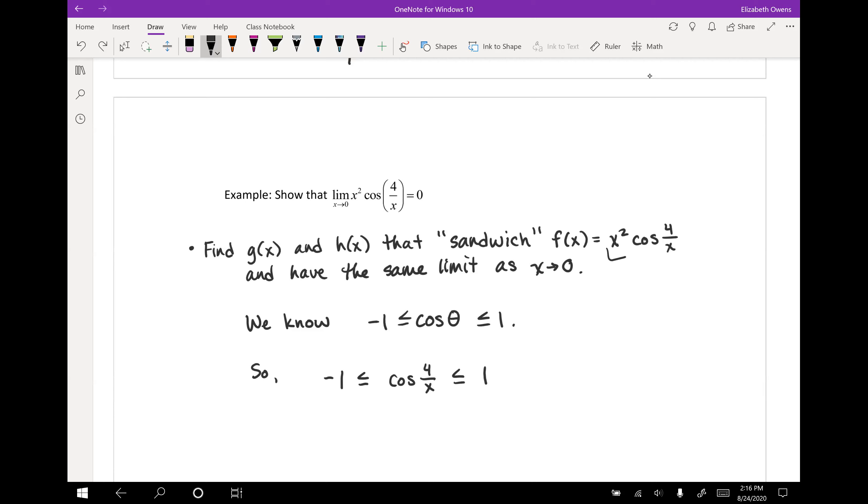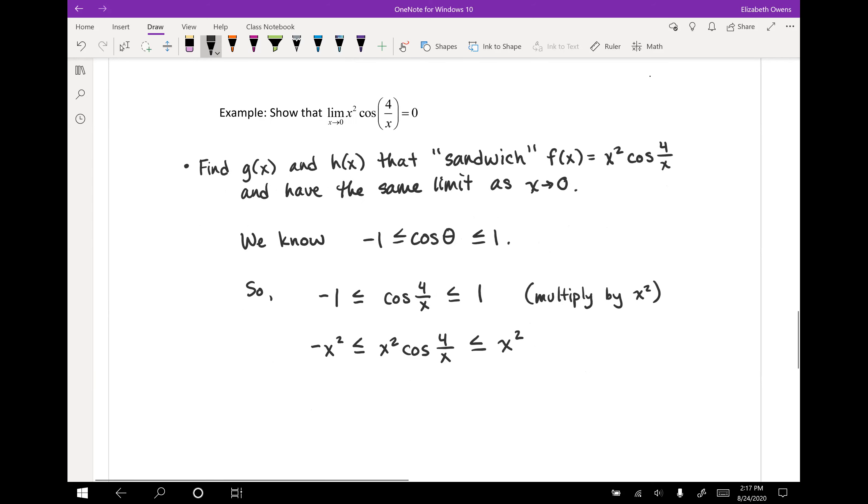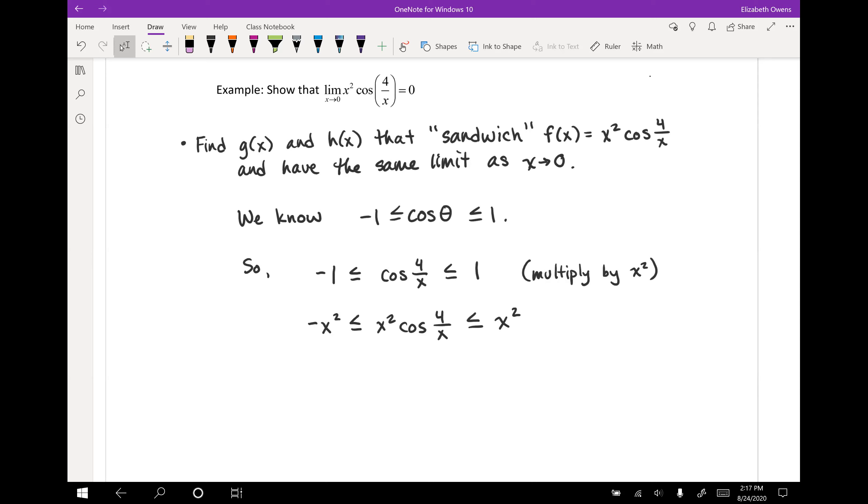And since x squared is multiplying our cosine function in f of x, we're going to just take our inequality here and we're going to multiply everything through by x squared, all three pieces of the inequality. So we'll have negative one times x squared would be negative x squared. And then cosine four over x times x squared gives us, well, the function that we were looking at, x squared times cosine four over x. And then one times x squared is just x squared.